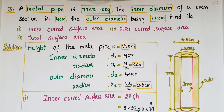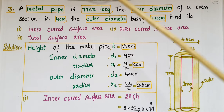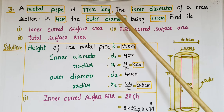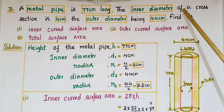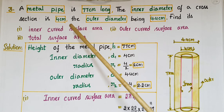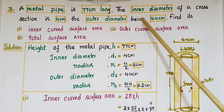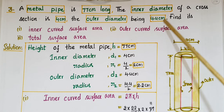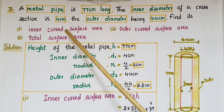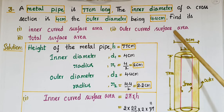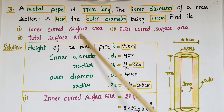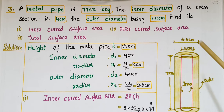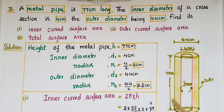Hello everyone. Today I am going to tell the solution of the third problem from Exercise 13.2 from Surface Areas and Volumes from NCERT Class 9. A metal pipe is 77 centimeters long. The inner diameter of a cross section is 4 centimeters, the outer diameter being 4.4 centimeters. Find its inner curved surface area, outer curved surface area, and total surface area.